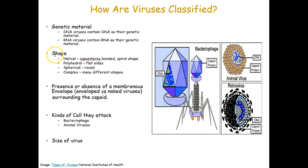We can classify viruses by their genetic material: is it DNA or RNA, single-stranded or double-stranded? We can classify by shape: is it helical, flat, spherical, or complex — like a full bacteriophage structure? We can also classify by the presence of an envelope, that extra outer coating some viruses have obtained from attacking a host cell. Finally, we classify by the kinds of cells they attack — animals or bacteria — and then further by what type of animal or bacteria.